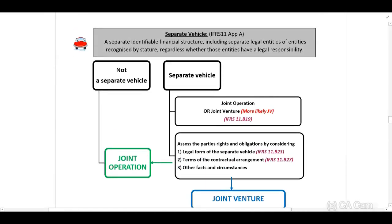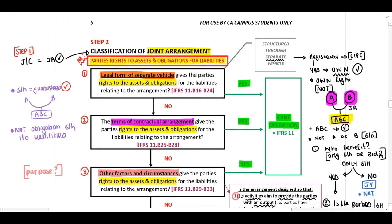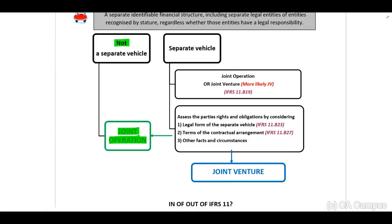I want to look at no separate vehicle versus a separate vehicle. If we have identified that there is not a separate vehicle, immediately you know that this will be a joint operation. If it is a separate vehicle — remember a separate vehicle is a separately identifiable financial structure, including a separate legal entity registered — then it can either be a joint operation or a joint venture.